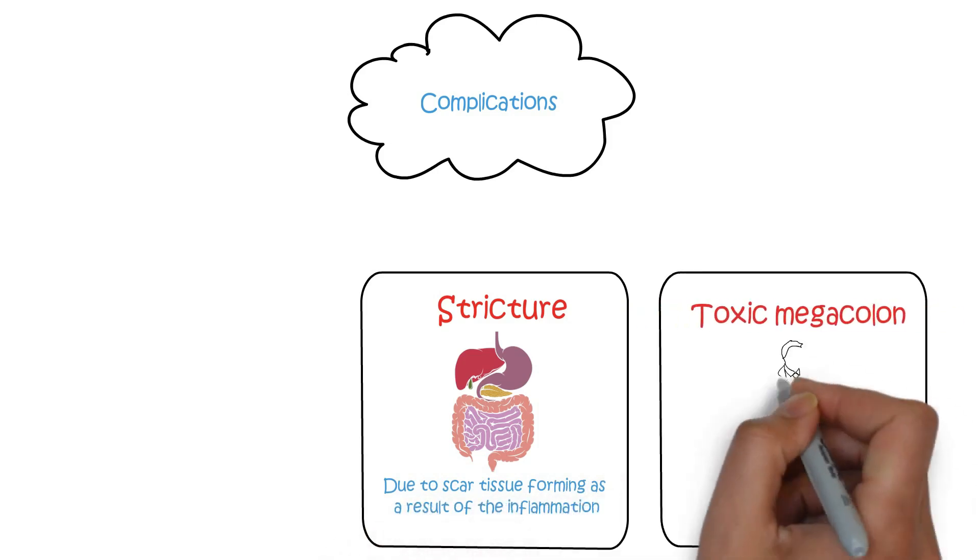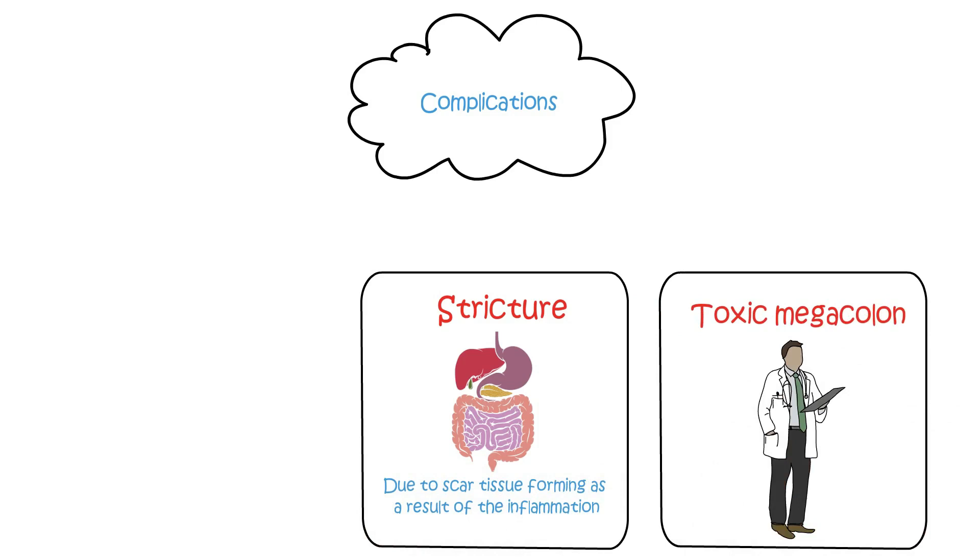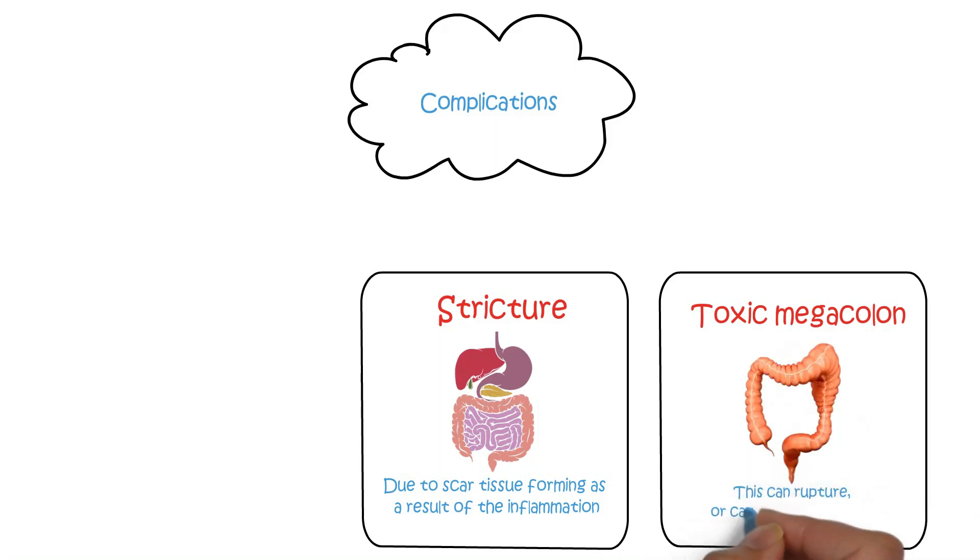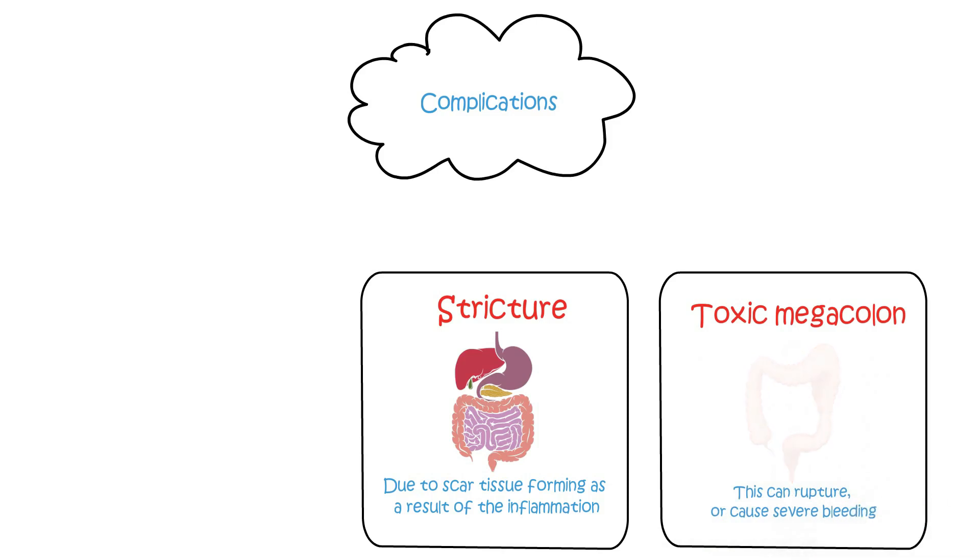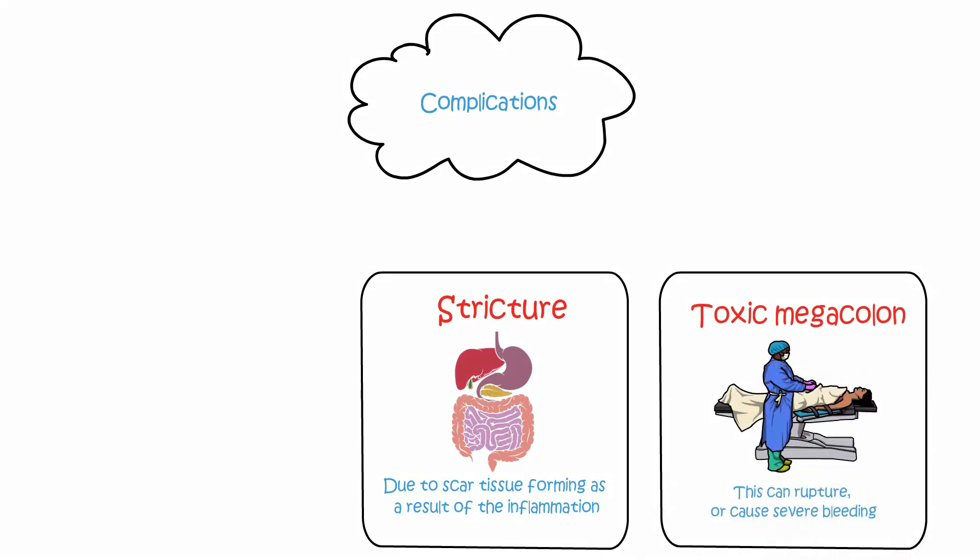Toxic megacolon. This is uncommon however is a serious situation. It occurs when the whole of the large intestine becomes ulcerated, inflamed, and dilated. This can rupture or cause severe bleeding. Urgent life-saving surgery would be required if this does not respond to medication.